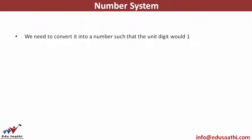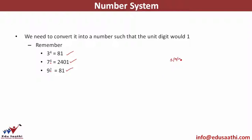Let's understand the procedure once again. We need to convert into a number such that the unit digit ends with 1. Remember: 3 raised to power 4 ends up in 1, 7 raised to power 4 ends up in 1, and 9 squared ends up in 1. So if you have any power, split it such that the internal power solves up and gives you 1 at the end — such that this value when solved ends up in 1.